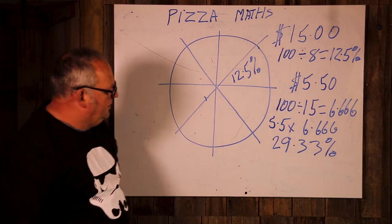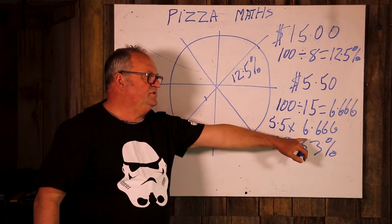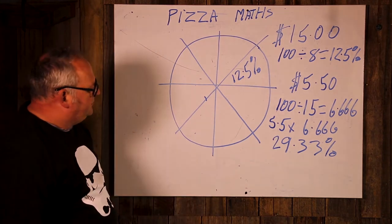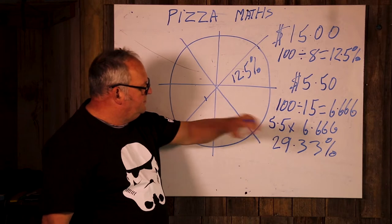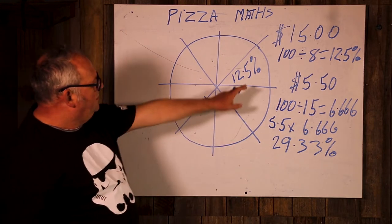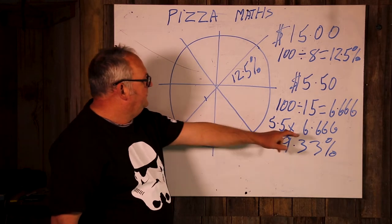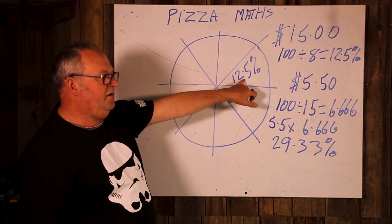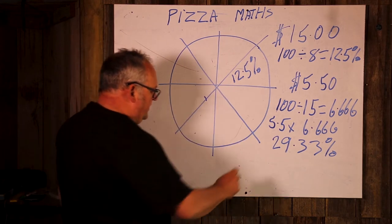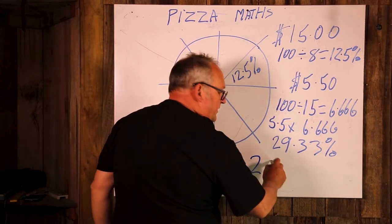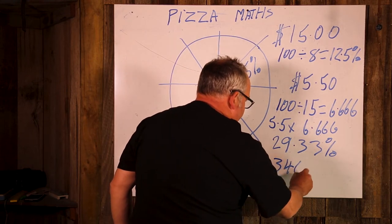and my math is pretty right, like it'd be 33.3% if it was exactly a third. So we need to find out how many slices he's bought. We divide 29.33 by 12.5, because that's the percentage of each slice, and we find it equals 2.346.